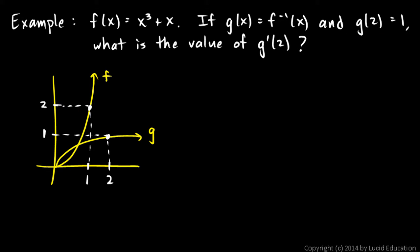Now we want to know the value of g prime of 2, so we want to know the slope of function g at x equals 2 — that slope marked in red. What you should be able to see from this graph is that this slope will be the reciprocal of the slope of f at the corresponding point. The slope of an inverse function is the reciprocal of the slope of the original function at the corresponding points, and those two points correspond to each other as a reflection across this line: (2, 1) and (1, 2). So we can find that slope because we know function f — we just take the derivative and find the value of the slope, and then the reciprocal of that will be what we're looking for.